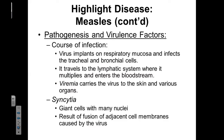Over the course of the infection, we'll find that the virus is going to implant itself in our respiratory mucosa. As it implants itself, it will infect both cells of the bronchia and the trachea. From our respiratory tract, the virus is then capable of traveling through the lymphatic system, where it will continue to multiply and eventually get dumped into the bloodstream. Viremia is then going to carry the virus to the skin and other organs of the body.